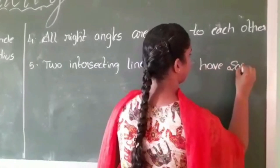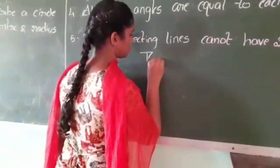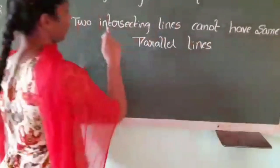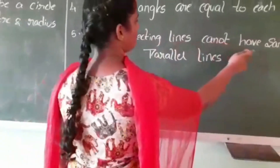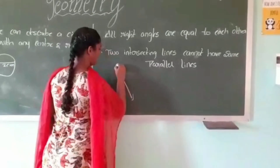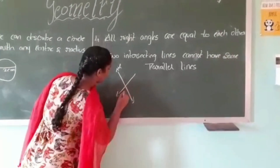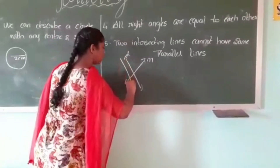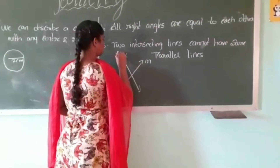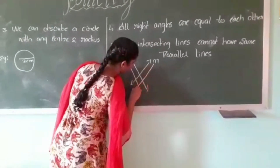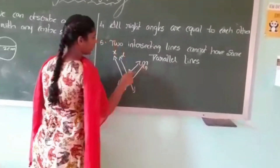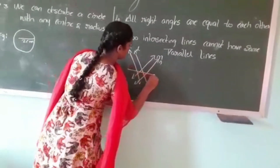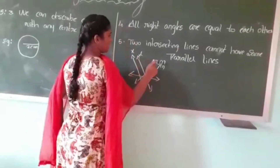Two intersecting lines cannot have the same parallel lines. Line L and line M are intersecting lines. Let us take a parallel line for L and mark it as X, and a parallel line for M and mark it as Y. Here we can see that line L and line M have different parallel lines — there is no common parallel line for line L and line M.